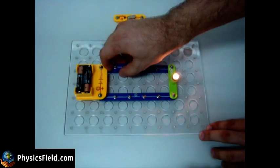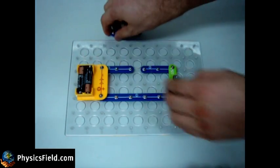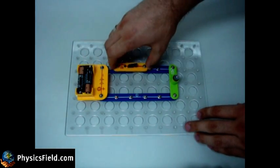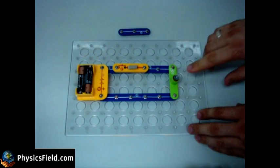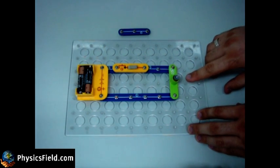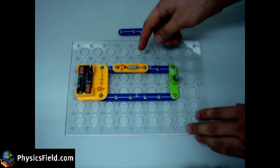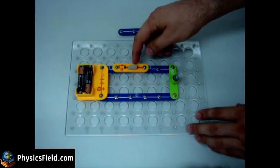If we remove this wire and place a switch here, again the light bulb does not glow. Because still there is a break in the circuit, the switch is open.